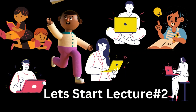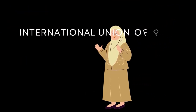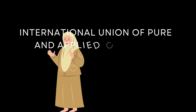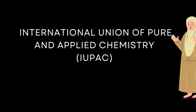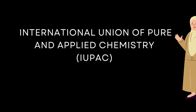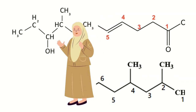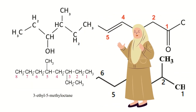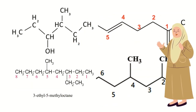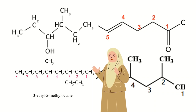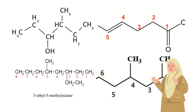In chemistry, naming compounds is essential for communication and understanding of chemical properties. The International Union of Pure and Applied Chemistry, or IUPAC, is the authority on naming chemical compounds. The IUPAC rules ensure that every chemical compound has a unique and systematic name, which helps to avoid confusion and ambiguity.